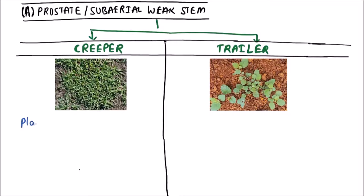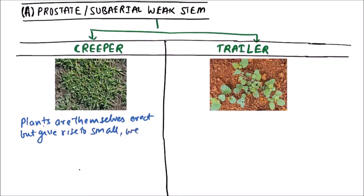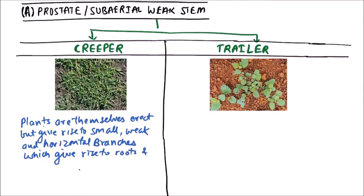In case of creepers, plants are themselves erect but give rise to small, weak and horizontal branches which give rise to roots and shoots at nodes. These further continue in the same manner.